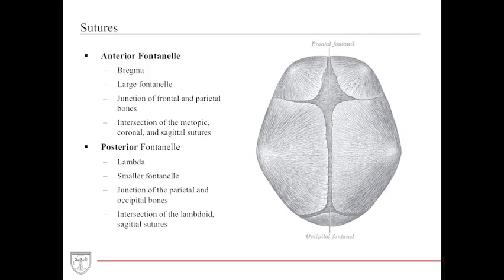Because sutures don't fuse at birth, you have areas called fontanelles — soft tissue areas where you can feel the underlying brain. There is an anterior and a posterior fontanelle. The anterior fontanelle, also called the bregma, is large and triangular, closes later, and is at the junction of the frontal and parietal bones — at the intersection of the metopic, coronal, and sagittal sutures. The posterior fontanelle is also triangular, sometimes palpable, and is the fusion between the lambdoid and sagittal sutures at the junction of the parietal and occipital bones.